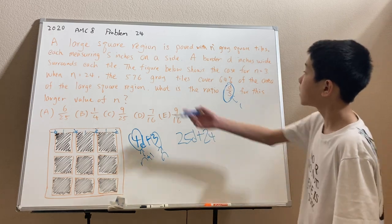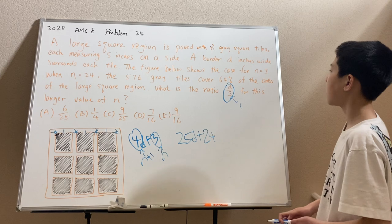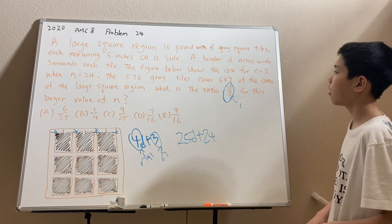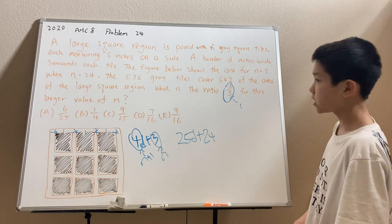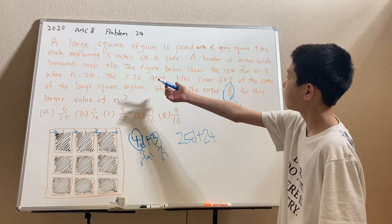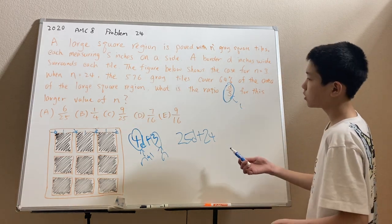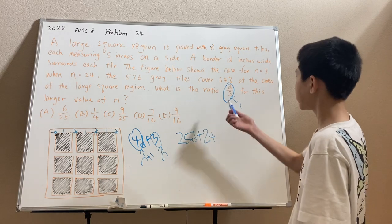Now, we can look at the further question. The 576 gray tiles cover 64% of the area of the larger square region. So that means that the 576 gray tiles, what's the total area of those? Well, that's another benefit of letting s equal to 1.